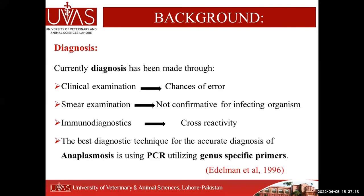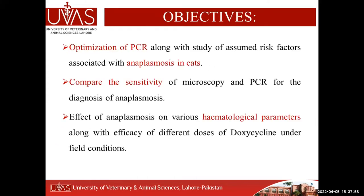For diagnosis of this disease, we normally perform clinical examination, but the nonspecific signs of anaplasmosis increase the chances of error. Blood smear examination is a relatively cheaper technique, but cannot provide a confirmatory diagnosis. Immunodiagnostics like ELISA can be performed, but there are issues of cross-reactivity. The only technique providing confirmatory diagnosis is PCR, which can be used with genus-specific or species-specific primers.